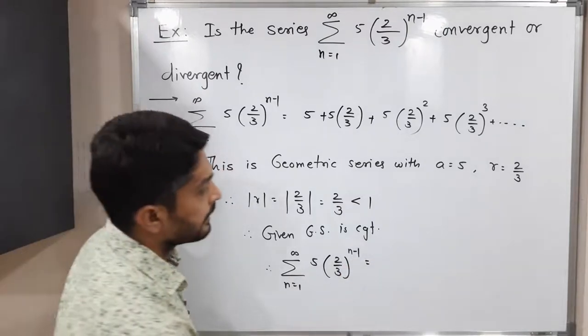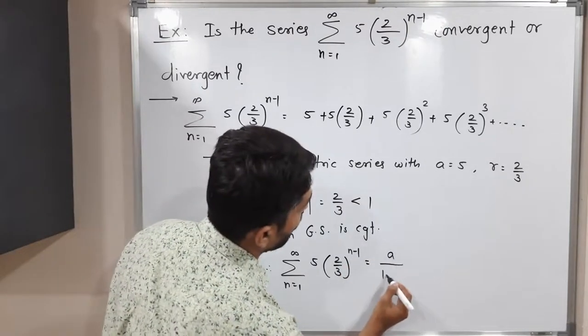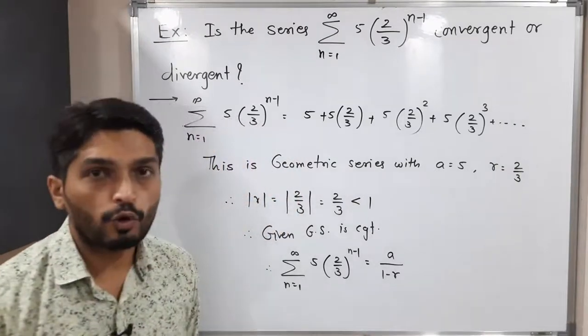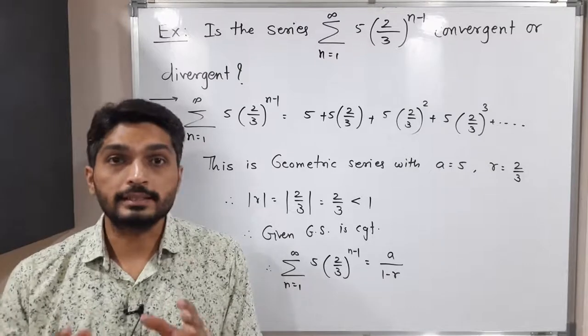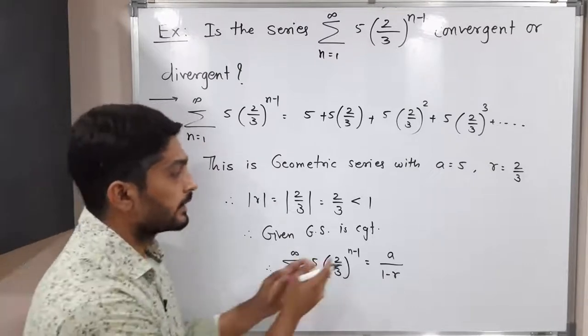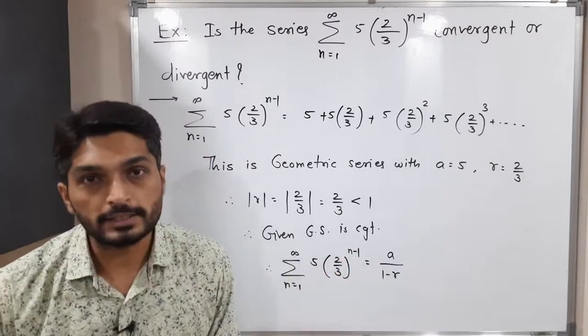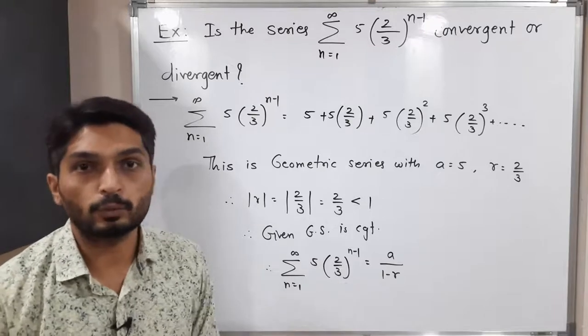Its sum is a upon 1 minus r. It has a fixed formula. When you have a geometric series with mod r less than 1, then its series is convergent and it converges to a upon 1 minus r. You can say its sum is a upon 1 minus r.